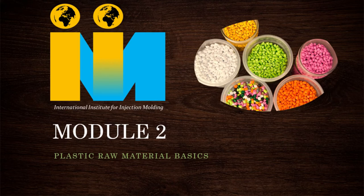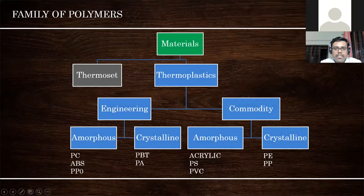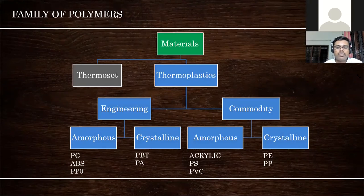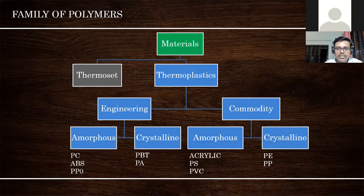In this section on plastic raw material basics, we will look at how to select the raw material and what the types of raw material are. This is the family of polymers. Plastic material is basically divided into two types: one is thermoset and the second is thermoplastics. Our subject is thermoplastics, and within thermoplastics there are majorly two types: engineering plastic and commodity plastic.